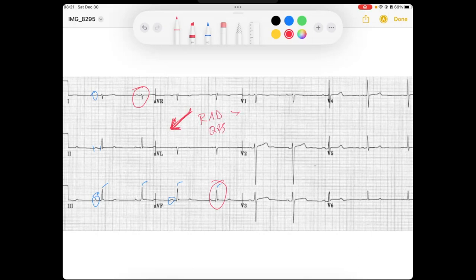And on that right axis deviation, the first thing I should think of is what's my differential diagnosis? Is it right ventricular hypertrophy? So I look at V1, and I see in V1, I should have an R wave that's greater than 7 millimeters for RVH, which I don't see. It's just a small R wave. And so I'm like, okay, I've excluded RVH.